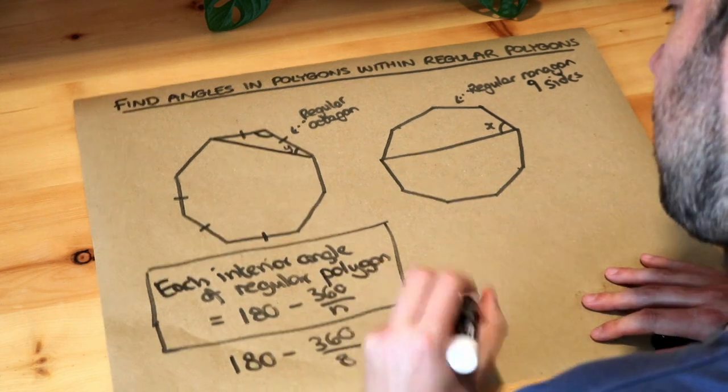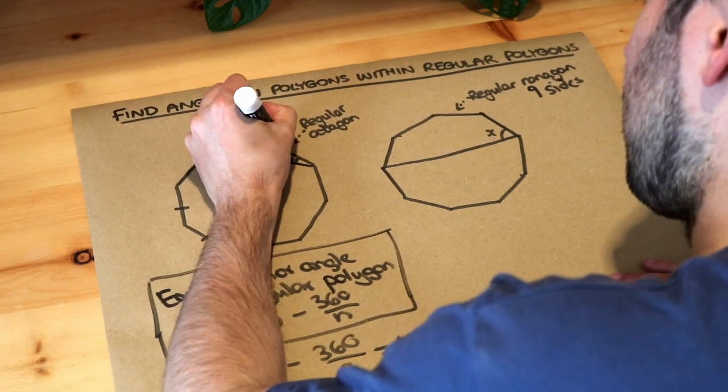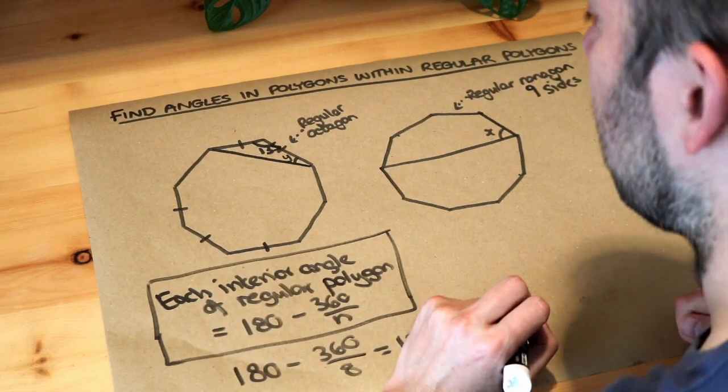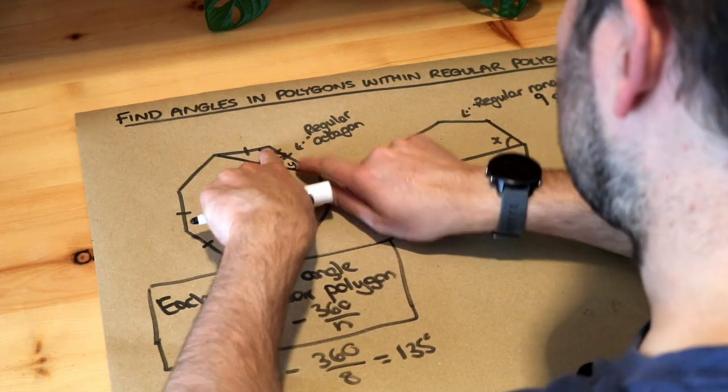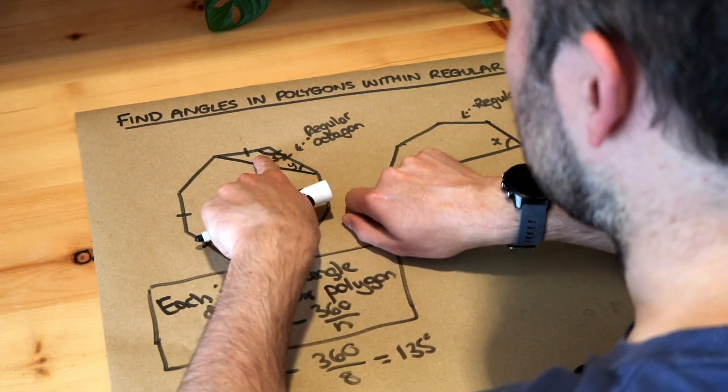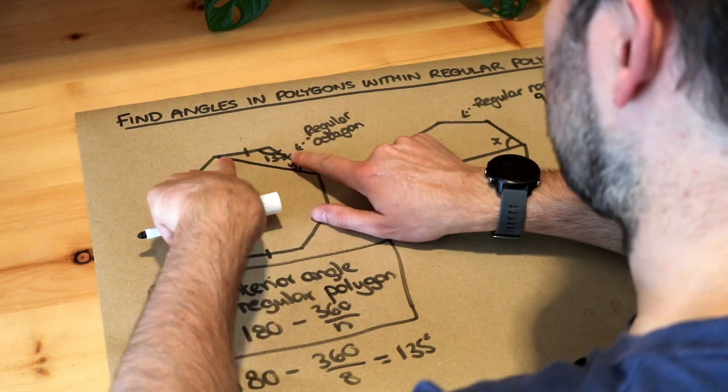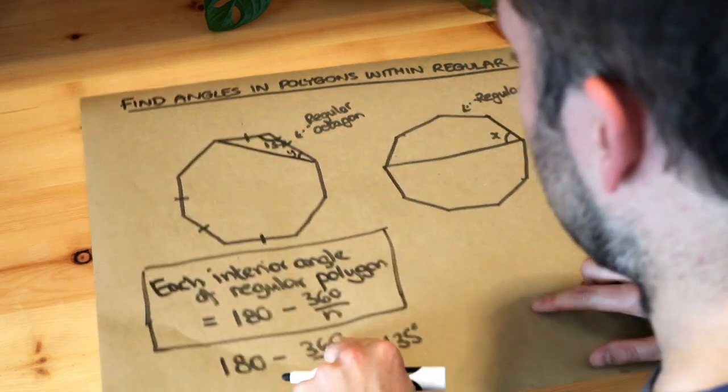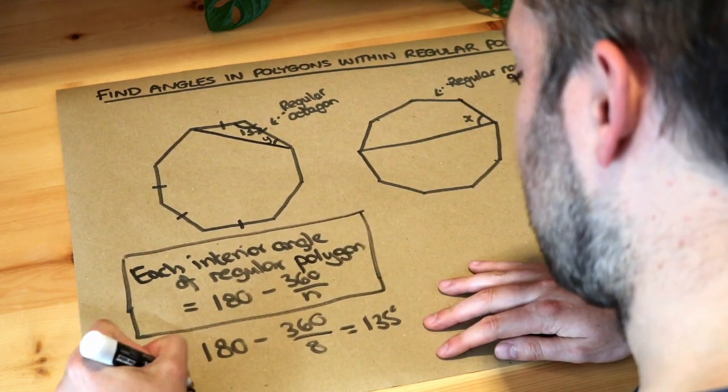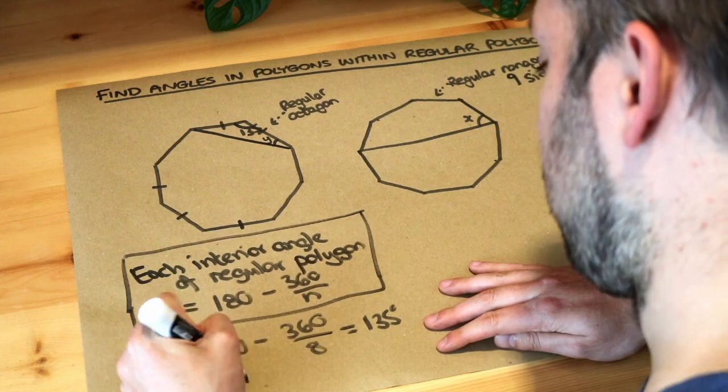So this interior angle here is 135 degrees, and then we can just subtract the 135 degrees from 180, which is 45 degrees, and then divide by 2 to get y. So we do 180 minus 135 is 45 degrees.